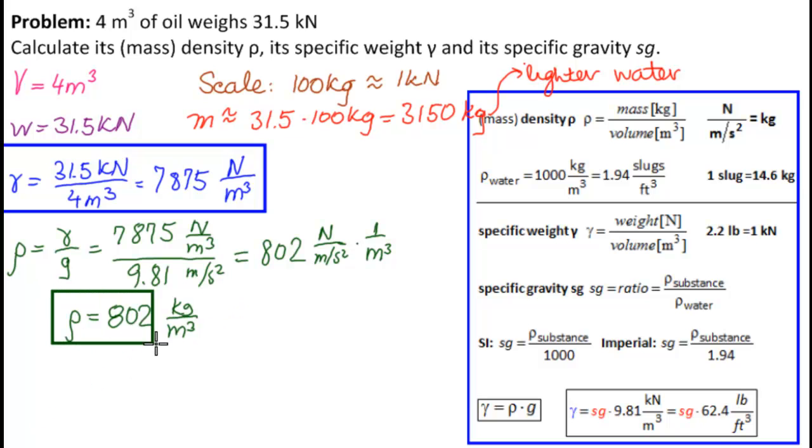So, this is our answer to ρ. And then SG is equal to, this is going to be a unitless thing, because it's just one row over another row. It's our 802 kilograms per meters cubed over 1,000 kilograms per meters cubed. This is water. Our substance over water. And, of course, that's just 0.8.